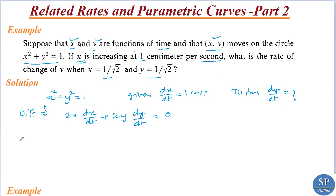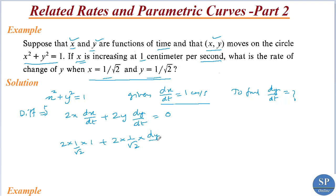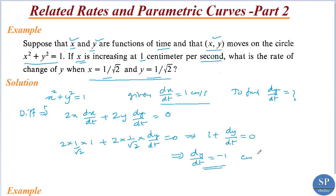Applying x equal to 1 by root 2, y equal to 1 by root 2, and dx by dt equal to 1 centimeter per second, we have 2 into 1 by root 2 into 1 plus 2 into 1 by root 2 into dy by dt equal to 0. We can divide through by 2 by root 2. Therefore, we get 1 plus dy by dt equal to 0, that is dy by dt is equal to minus 1 centimeter per second.